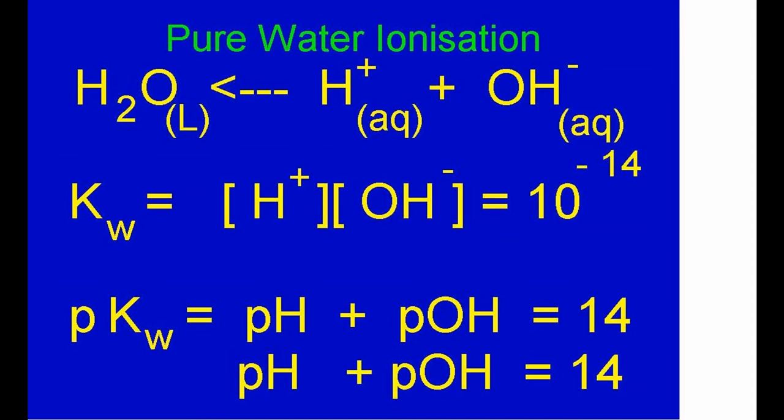In one of the classic experiments of history, scientists carefully purified water and measured the slight electrical conductivity caused by the fact that a handful of water molecules formed ions. The equation tells us that in all watery solutions, the product of the hydrogen ion and hydroxide ion molarities is always 10 to the minus 14, so pH plus pOH equals 14.